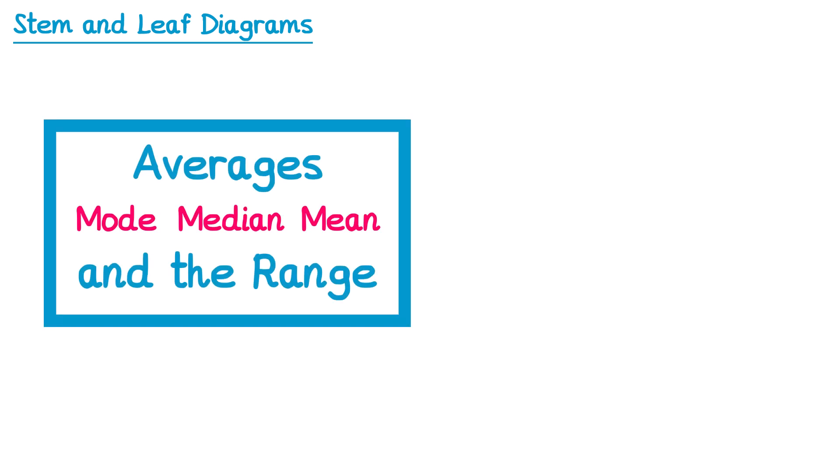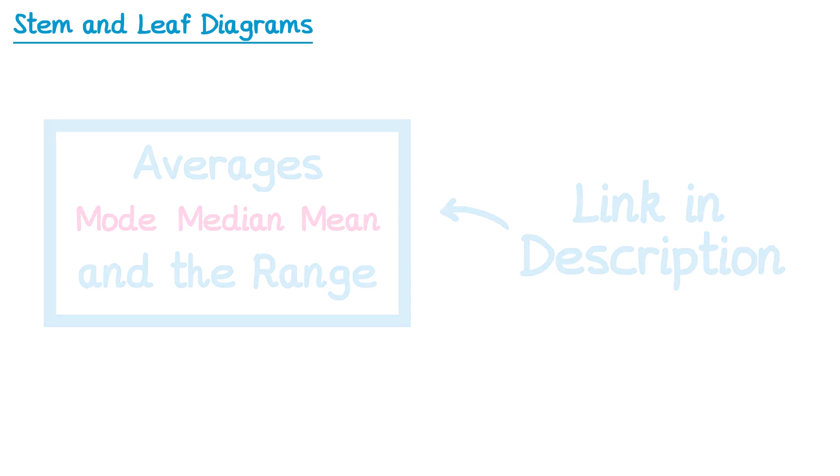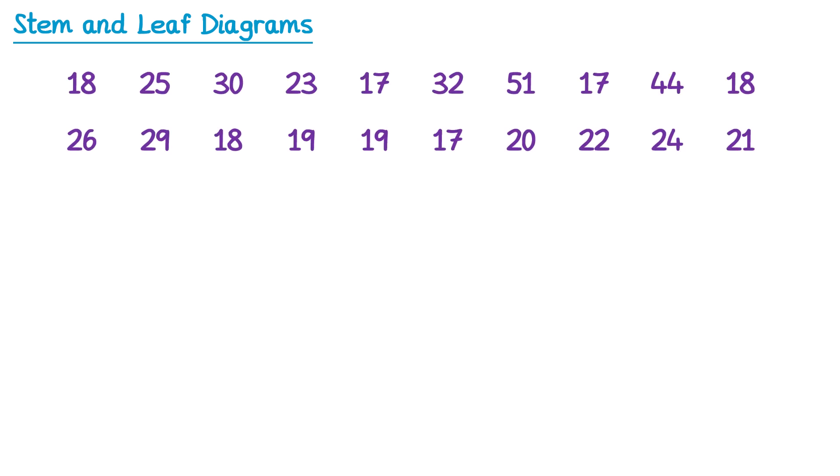In this video we're going to look at stem and leaf diagrams. I'm going to assume you can already calculate the averages and the range. If you want to revise that topic quickly first, you can find a link to my video on it in this video's description. Here we have some data — for example, the ages of some people attending a driving test centre on a particular day.